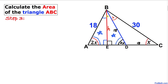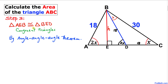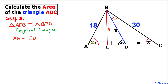Therefore these two triangles are congruent according to the angle-angle-angle theorem. We conclude that side length AE equals side length ED. Let's call each of these A.